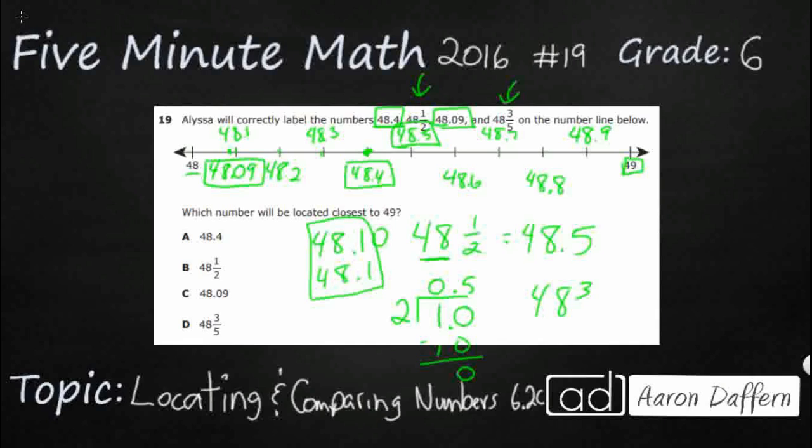So, all we need is that 48 and 3 fifths. So, let's do the same thing. 48 and 3 fifths. Let's divide up. 5 goes into 3 zero times. Let's put a zero there. 5 goes into 30, 6 times. And that's going to be even. So, 48 and 3 fifths is the same as 48 and 0.6 or 6 tenths. And I've got that right here. 48.6, 48 and 6 tenths.